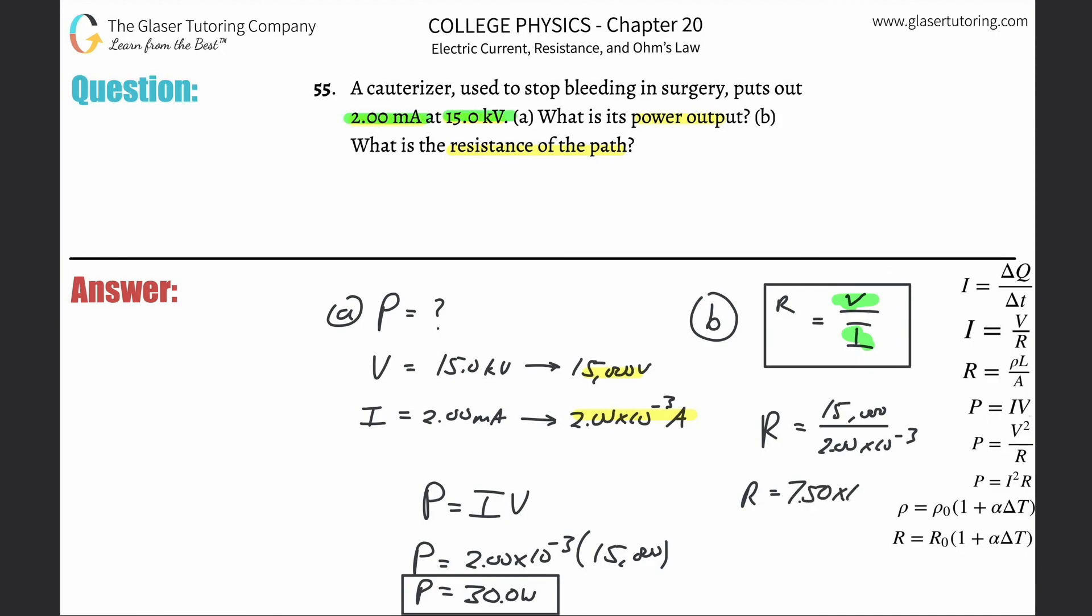7.50 times 10 to the 6. That's a lot of ohms. And that resistance then produces heat energy. And that heat energy is what is able to cauterize and stop the bleeding.